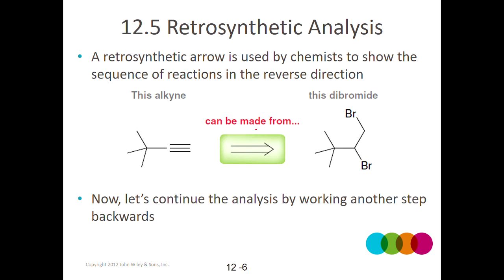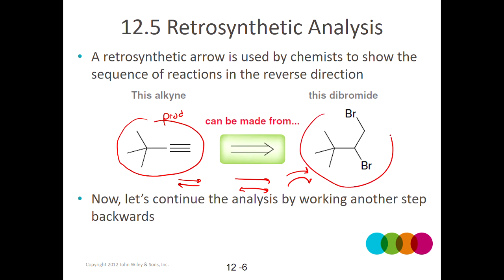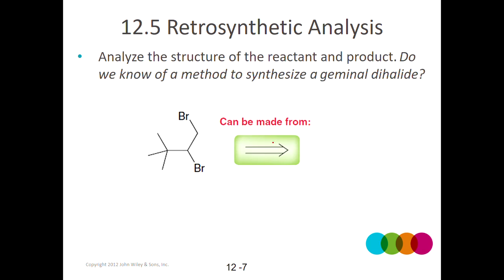Just to point out: this retrosynthetic arrow is a very specific style — it's not a regular arrow, not curved, not an equilibrium arrow. This arrow specifically means you're working backwards. Whatever's on the left-hand side is the product and whatever's on the right-hand side is the reactant. We're working retrosynthetically to determine: if I want to make this, what do I need to start with, what's the most recent intermediate I can think of where I know reaction conditions to convert it into the product.